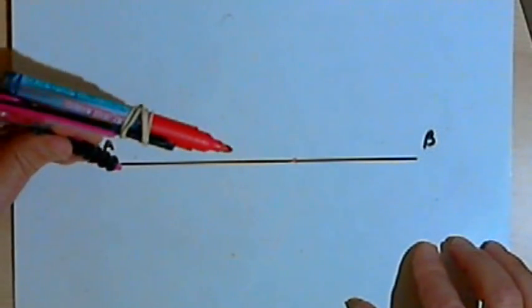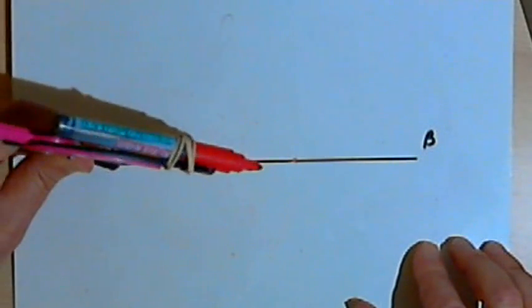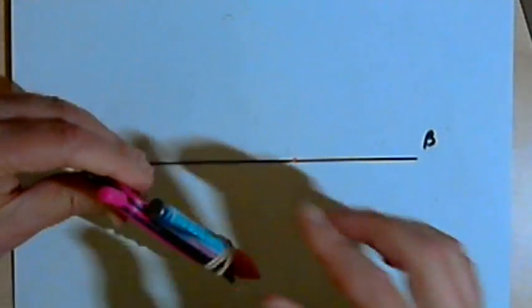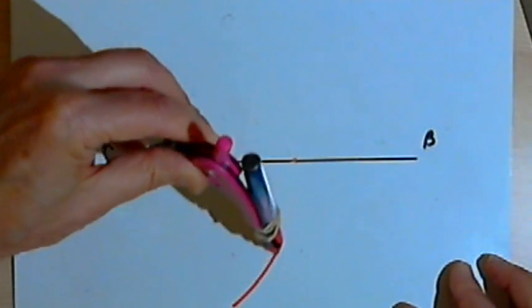Now this is pretty easy to do. I'm going to take a compass, place it on point A, and draw an arc that goes through the line segment.